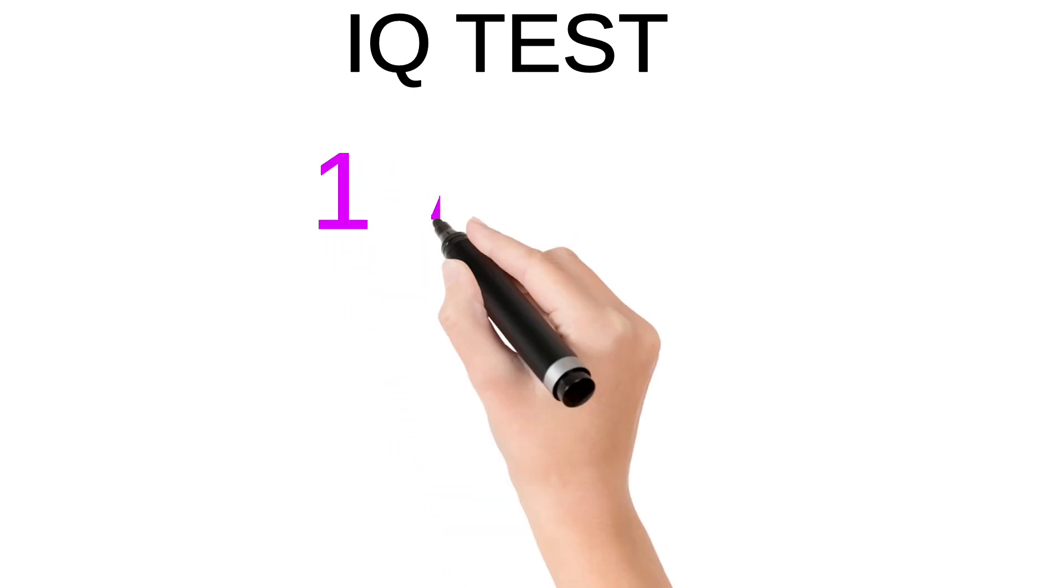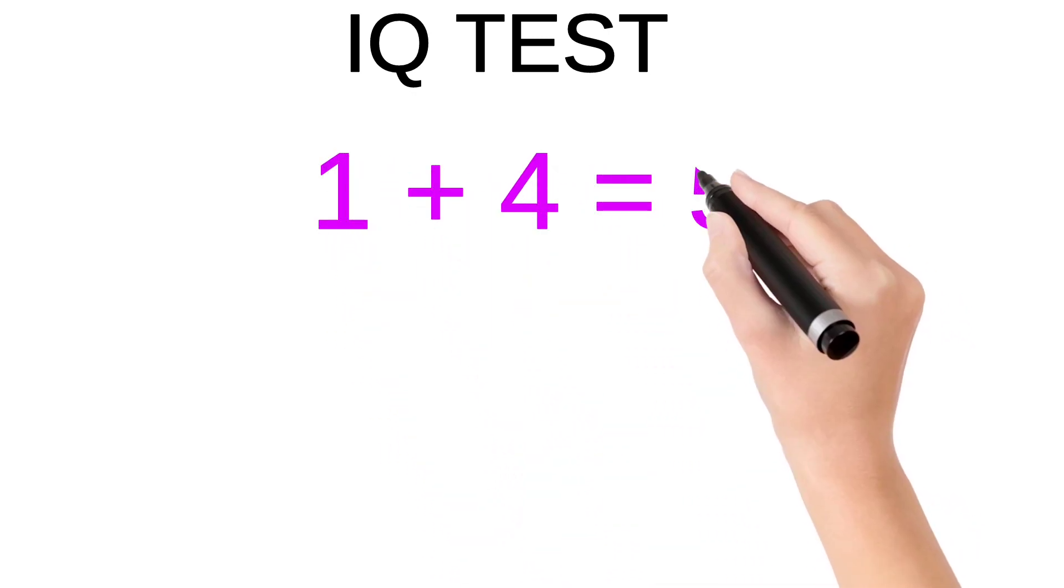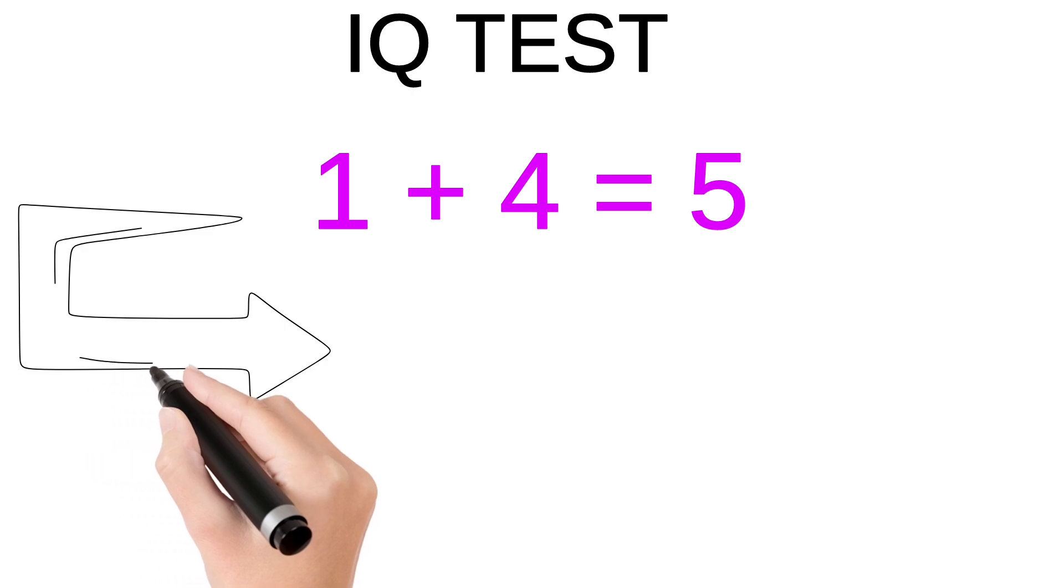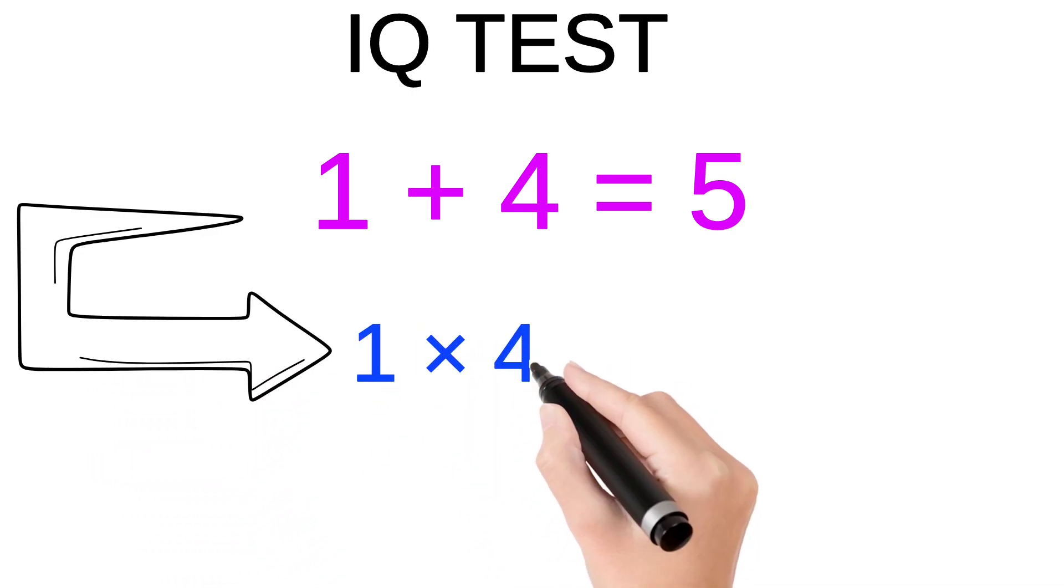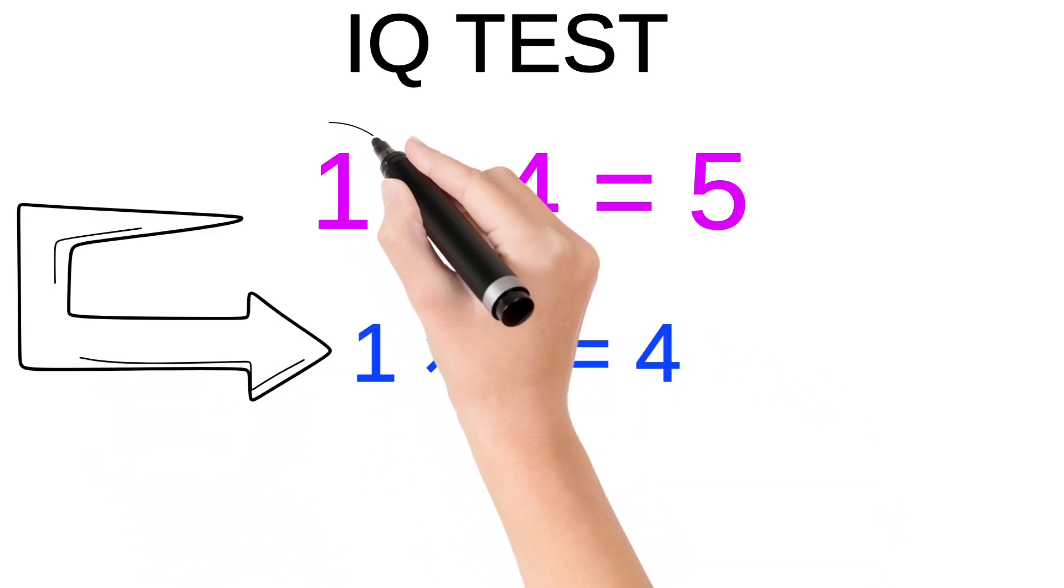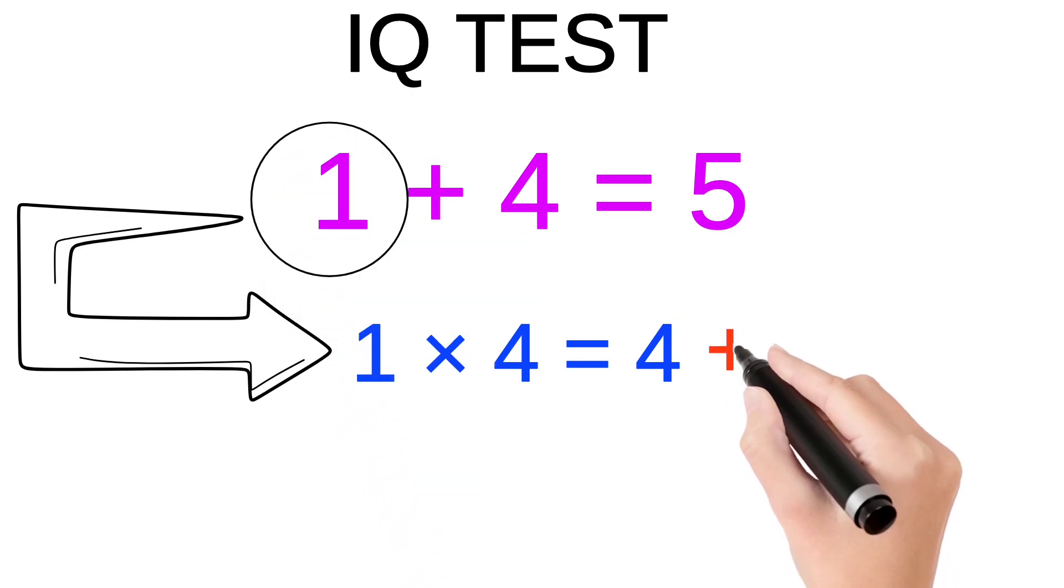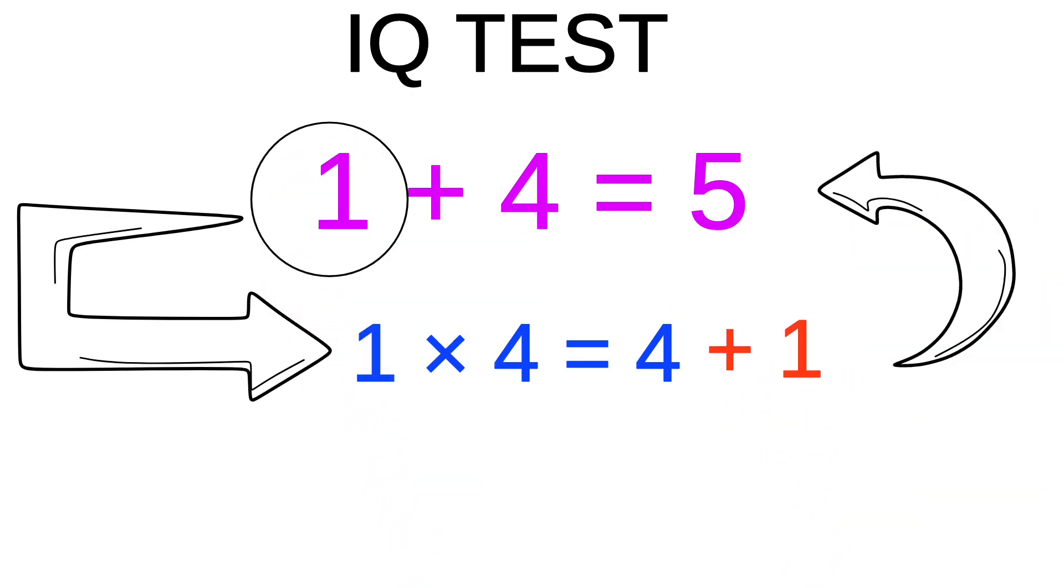We are given that 1 + 4 = 5. If we multiply both numbers, that is 1 × 4, we get 4, and add the first number which is 1, we get 5.